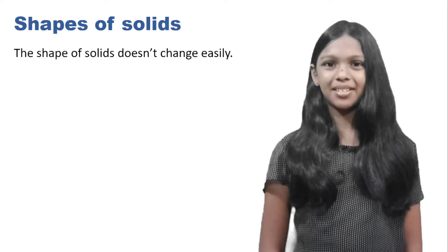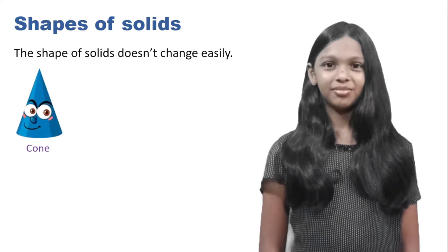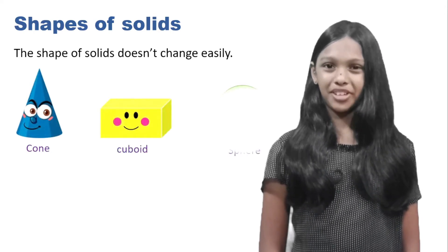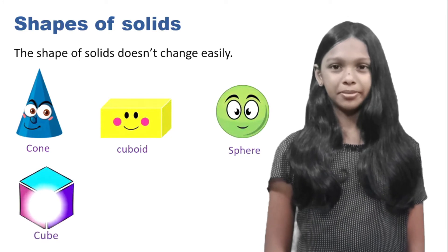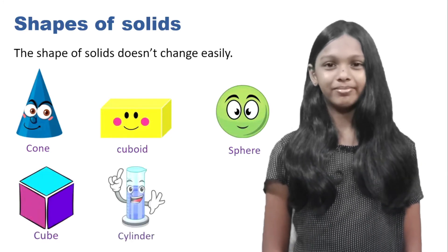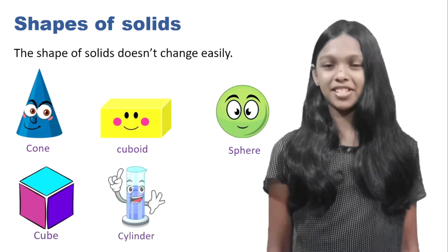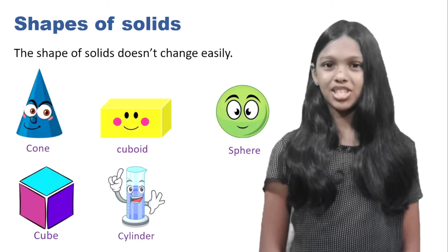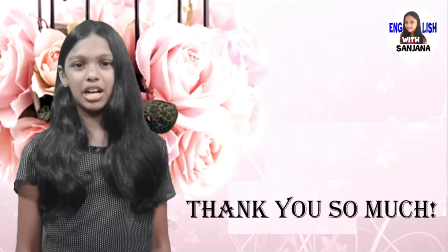Some examples of shapes: cone, cuboid, sphere, cube, and cylinder. This is the end of my presentation on characteristics of solids.